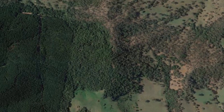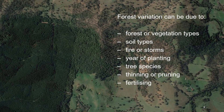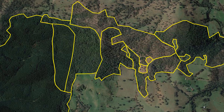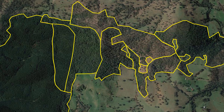Within larger forests, there is often variation due to forest or vegetation types, soil types, areas affected by fire or storms, year of planting, tree species, thinning or pruning activities, and fertilising. If there are variations within your forest, you should divide the area into more uniform sections, known as strata, and treat these sections separately. This will minimise the variability within each stratum, reduce the number of plots to be measured, save cost and effort, and provide a more accurate result.